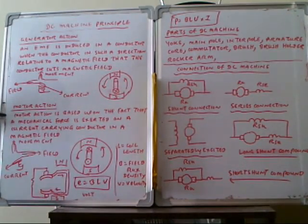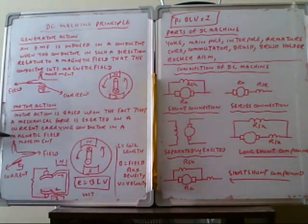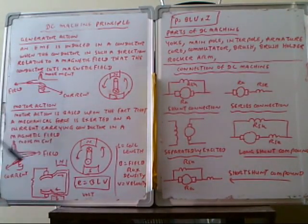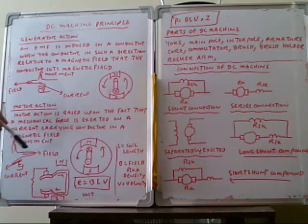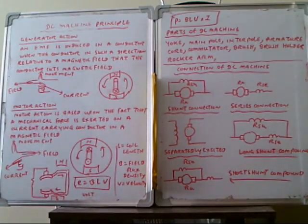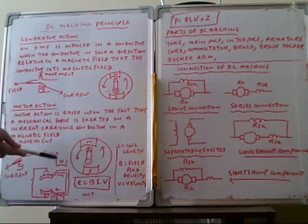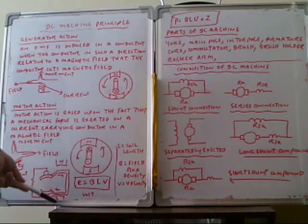The conductor will be moving across the arrow direction. The motor action is based upon the effect that a force is exerted on a current-carrying conductor in a magnetic field. Under the magnetic field, the conductor is moving in the downward direction. This is the basic principle of the DC machine.